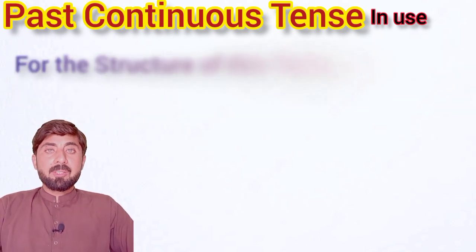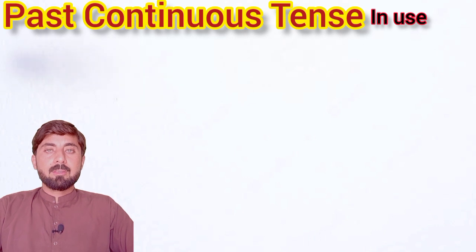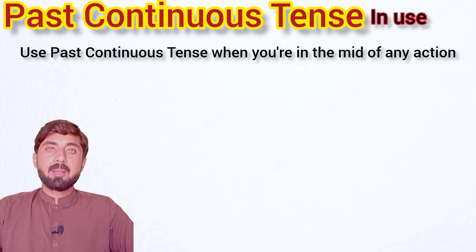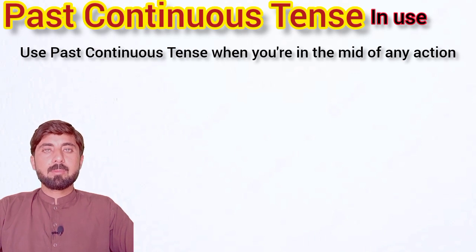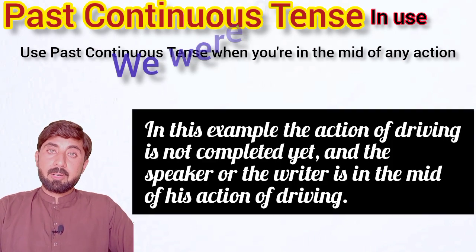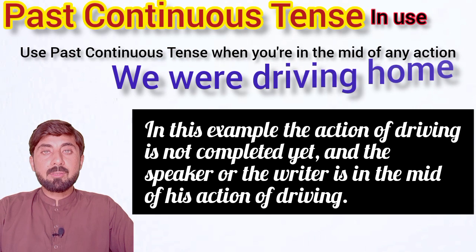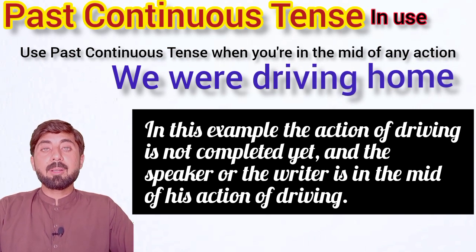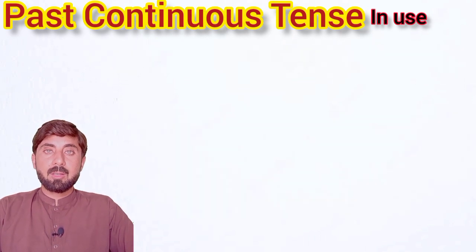The very first situation is that we use past continuous tense when we are in the middle of any action. For example: 'We were driving home' — means you are in the middle of the action of driving a car.